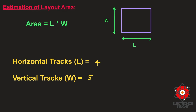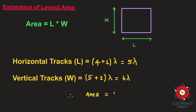From the layout diagram, the total horizontal track count was 4 and the vertical track count was 5, without the plus 1. Adding plus 1 to each: horizontal tracks become 4 + 1 = 5 lambda, and vertical tracks become 5 + 1 = 6 lambda. This accounts for the n-well and p-well regions. Therefore the total area is 5 lambda × 6 lambda = 30 lambda squared.